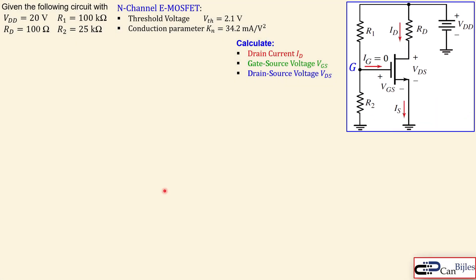Let's look at our circuit. We have three resistors R1, R2, and RD — this is called the drain resistance. We have the MOSFET here which is an n-channel MOSFET, also called the E-MOSFET for enhancement, and we also have VDD which is the DC voltage source. The values of the resistors and the DC voltage source are shown here.